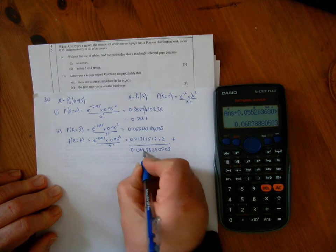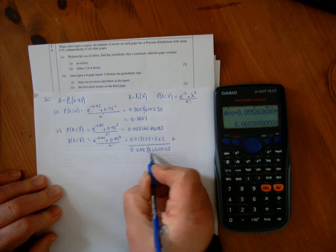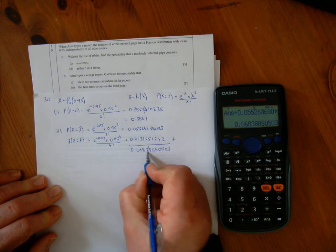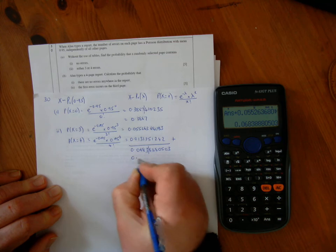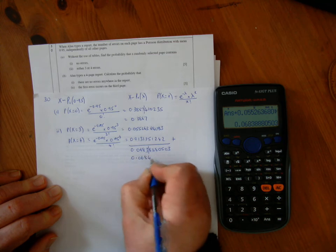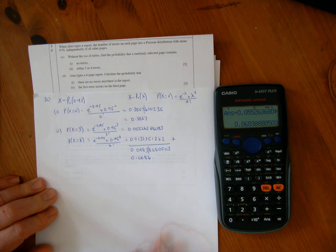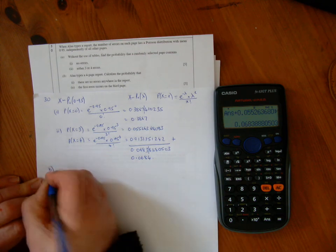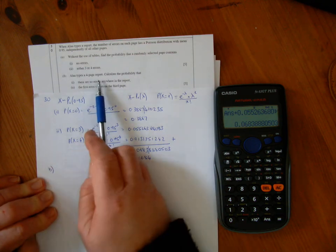So that's 0.06838888... To 4 decimal places, the 8 is bigger than 5, so change the 3 to 4. The answer is 0.0684.